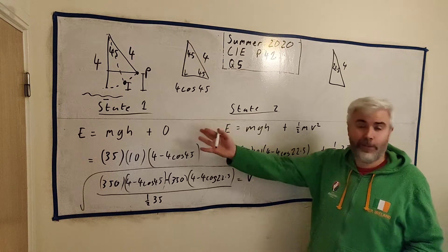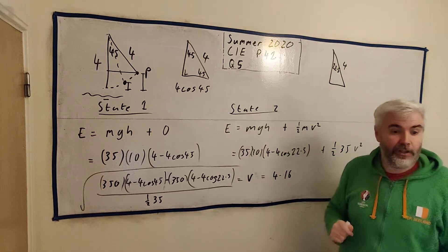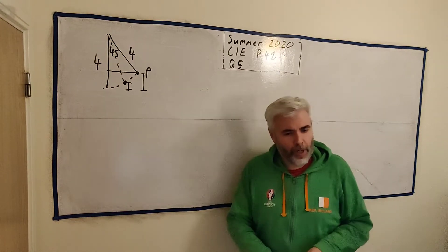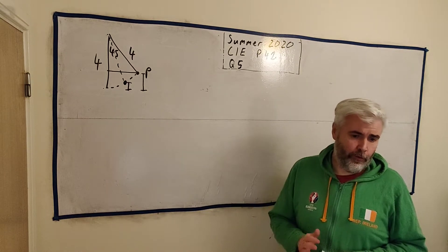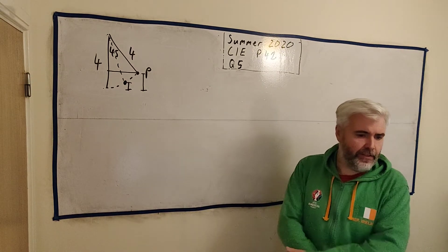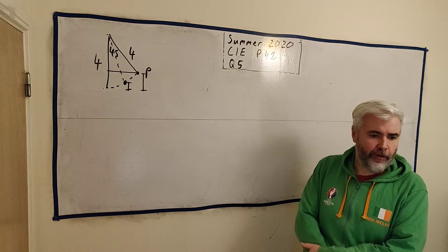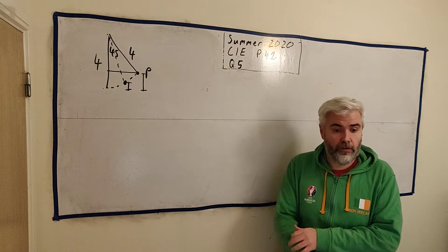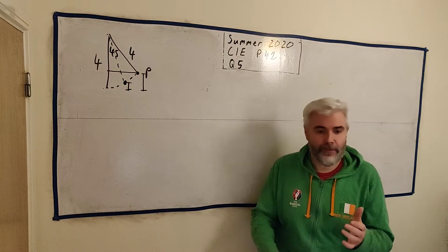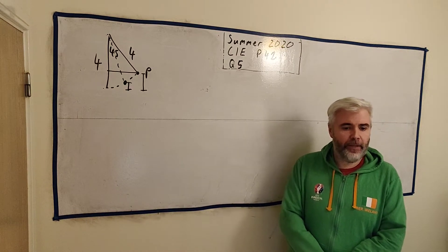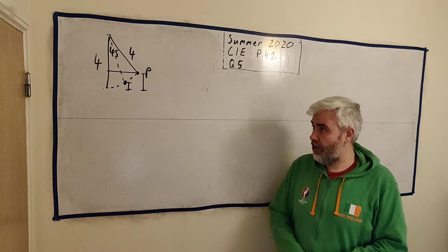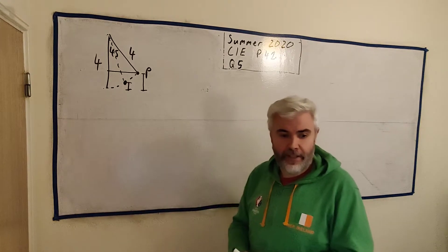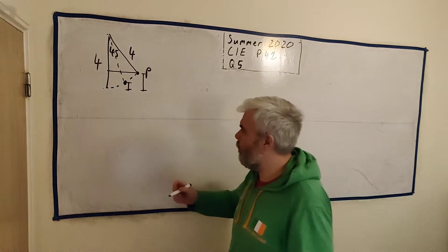I'll rub this out and we'll do part B. It's quite similar. We're going to have two states of energy. At this time, there is going to be a resistance force. So for part B, they say there is a resistance force this time. The work done against the resistance force as P travels from its initial position to its lowest point is X joules. So that's how much work. Work is the same as energy. The speed of P at its lowest point is 4 meters per second.